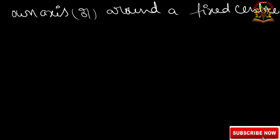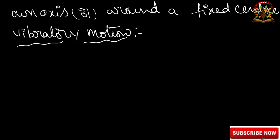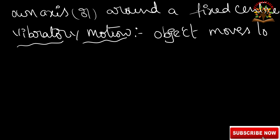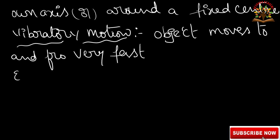Next, vibratory motion. All musical instruments come under vibratory motion. When an object moves to and fro — that is, back and forth — very fast, that kind of motion is known as vibratory motion. Example: strings of a guitar when plucked come under vibratory motion.